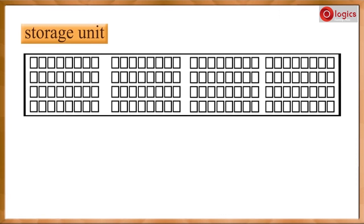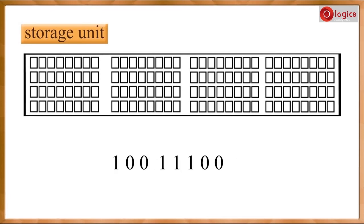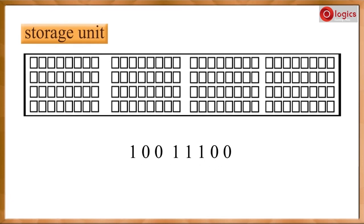Basically, the storage unit is divided into a number of bytes. Eight bits is equal to one byte. You need at least one byte to store data on the computer. The binary number for one fifty-six is 10011100. It occupies one byte in the memory.